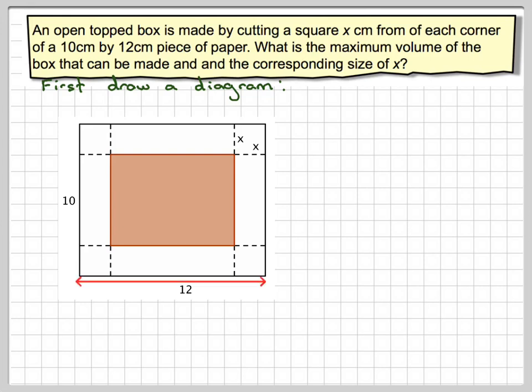This length here is 12. This length here is 10. I'm going to cut out the value of x. What will be this length? Pause the video for a moment and see if you can think for yourself. If this is 12 and this is x and this has to be x, well, this is going to be 12 minus 2x.